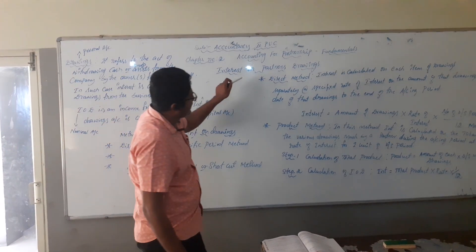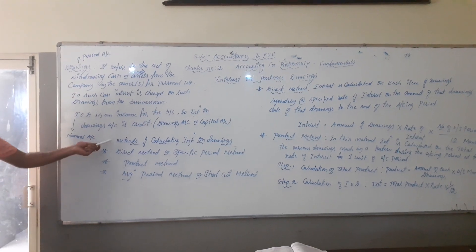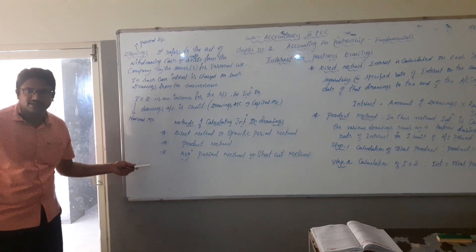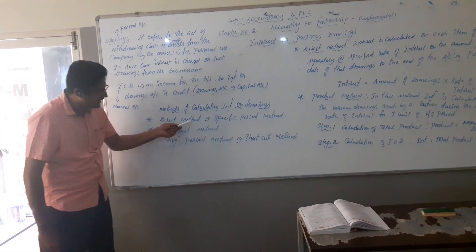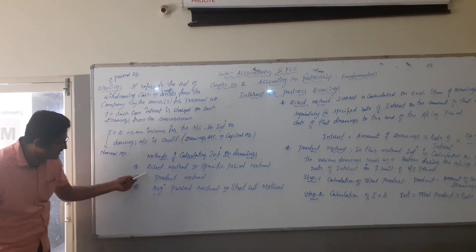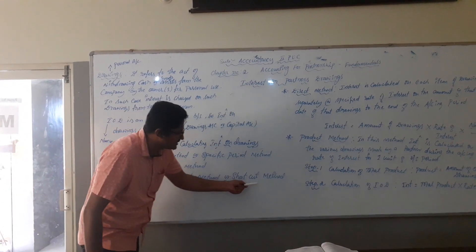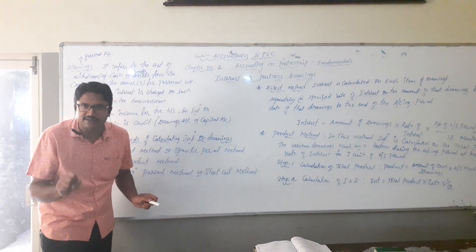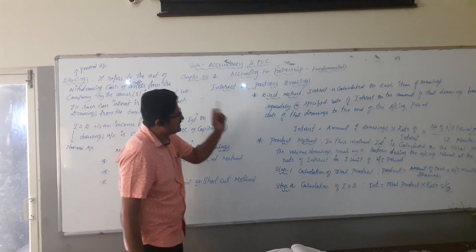Interest on drawings can be calculated in different methods. There are three methods: the first one is the direct method or specific period method, the second one is the product method, and the third one is the average period method or short period method. Now the first one is the direct method.